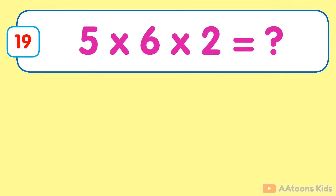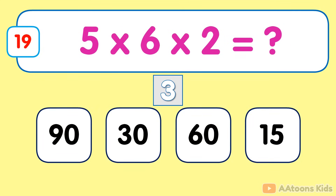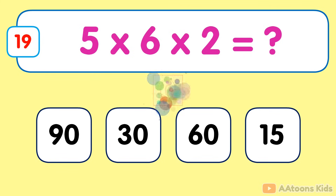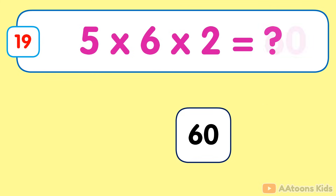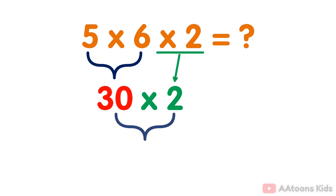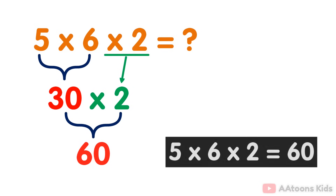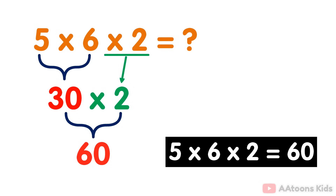5 multiplied by 6 multiplied by 2. The answer is 60. Simply multiply the numbers 5 and 6 which equals 30. Then you multiply the result 30 by 2. You will get 60. Therefore the answer to 5 multiplied by 6 multiplied by 2 is 60.